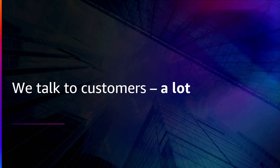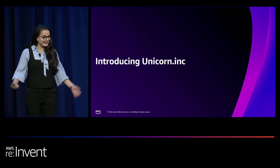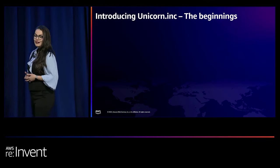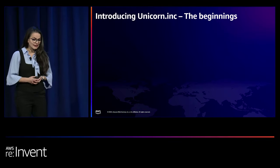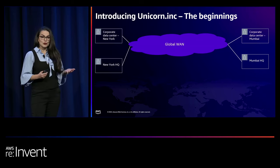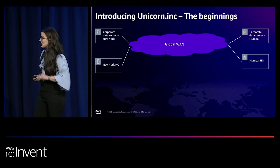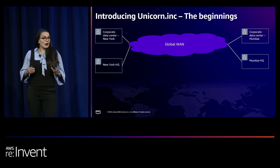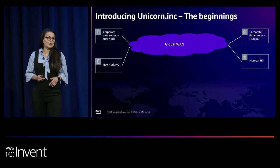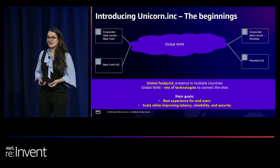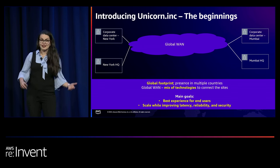Hi everyone. Indeed, we do talk a lot with customers and with partners. So I will introduce you now to Unicorn.think — let's have some fun. Unicorn.think is our customer, a global customer with offices in New York, a data center, the headquarter, and also in Mumbai — another headquarter there. Their on-site locations are connected via their global WAN, which is basically a mix of network technologies like MPLS, internet services, you name it. They are used to connect all locations, but they are starting to scale.